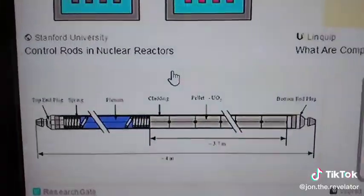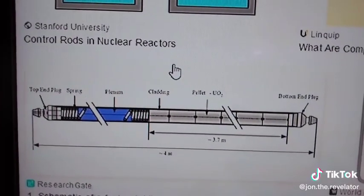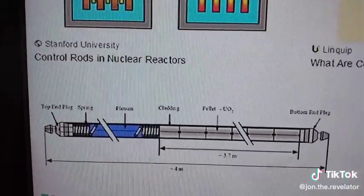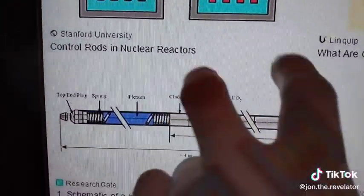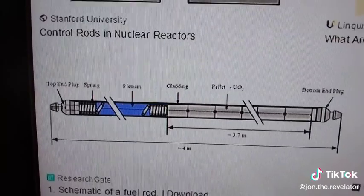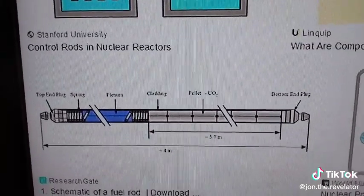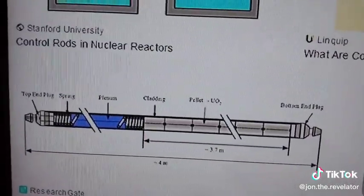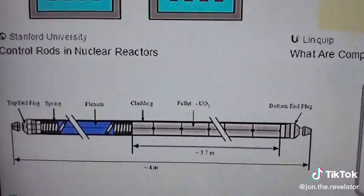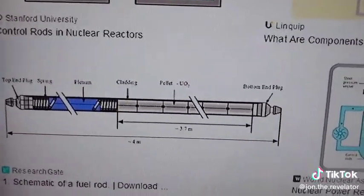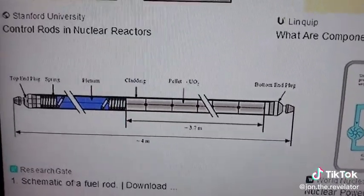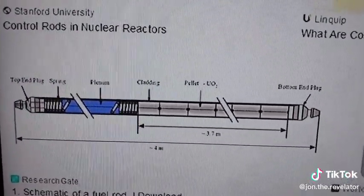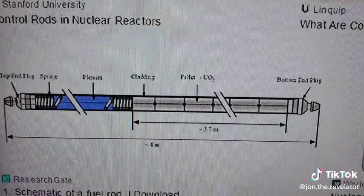Now look at this fuel rod — doesn't it look like a staff? They're nuclear rods, but Aaron's rods were kept in the Ark of the Covenant. And an ark is plasma. So even Moses' staff had properties to it. I hate to throw that kind of stuff out there, but history does repeat itself, and we've been intelligent for thousands and thousands of years. We're an ancient species — we may be one of the newest species on Earth, if not the newest, but we're still pretty ancient.